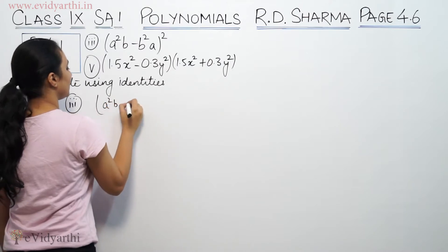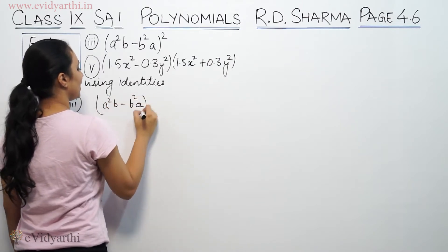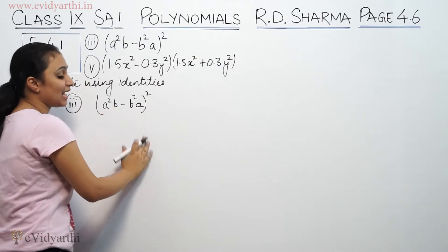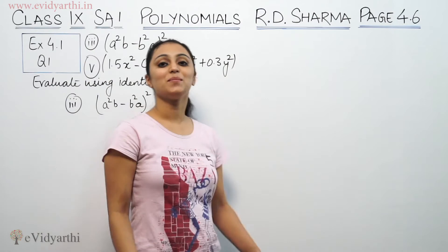This is (a²b - b²a)². So basically, this is (x - y)² form. Now we can apply the identity x² + y² - 2xy.